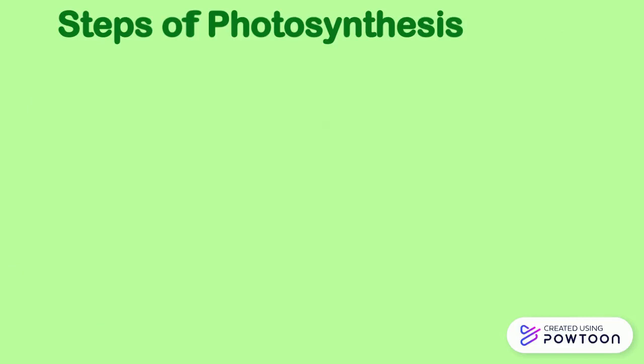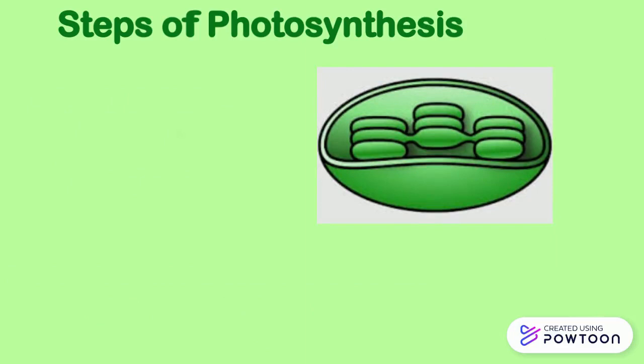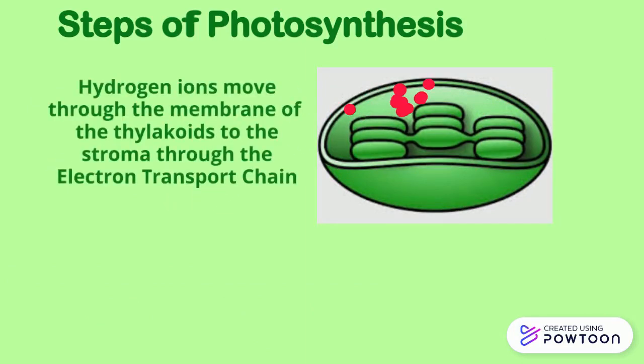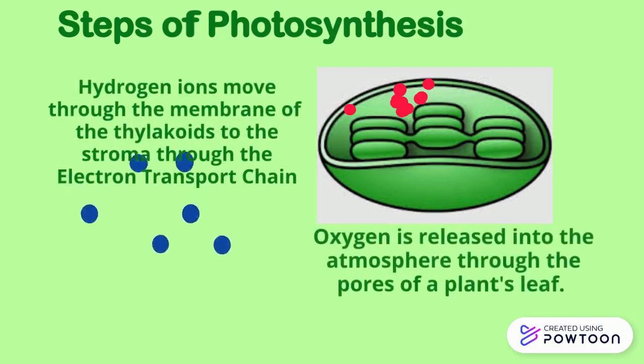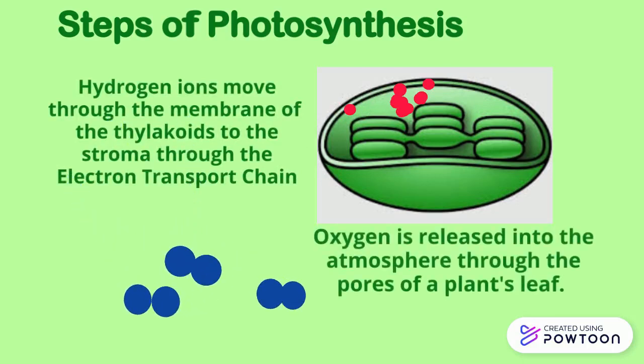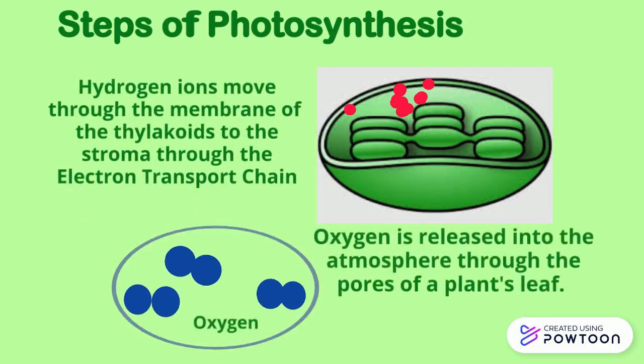In the next step, the hydrogen ions move through the membrane of the thylakoids to the stroma through the electron transport chain. Oxygen is then released to the atmosphere through the pores of the leaf.